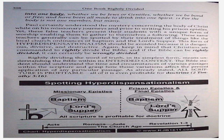Yet these false teachers present their students with a unique form of worship enabling them to gather to themselves a following. These same teachers generally can be spotted by their treatment of things like the local church ordinances of baptism and the Lord's Supper. This form of hyper-dispensationalism should be avoided because it is dangerous, divisive, and destructive. Christians are commanded to rightly divide the Bible, and if the Bible can be rightly divided, it can be wrongly divided. Rightly dividing the word of truth in its simplest form means understanding the Bible within its intended context. The Bible student should understand the time and circumstances of various passages within the Scripture and grasp how those variations affect the present application of any particular passage. As already stated, all Scripture is profitable — all of it is even profitable for doctrine, 2 Timothy 3:16.